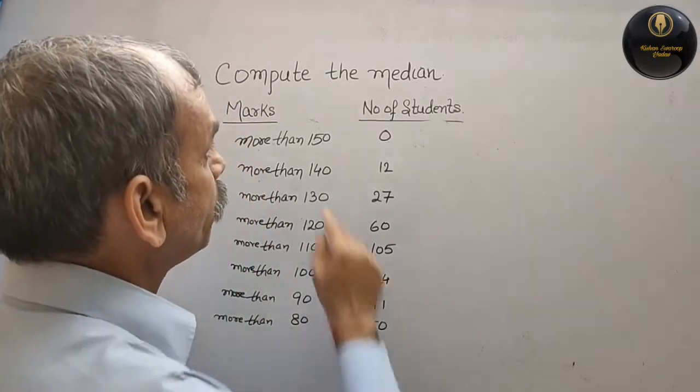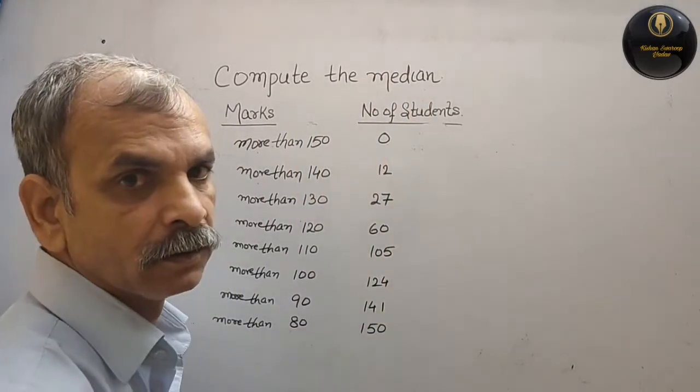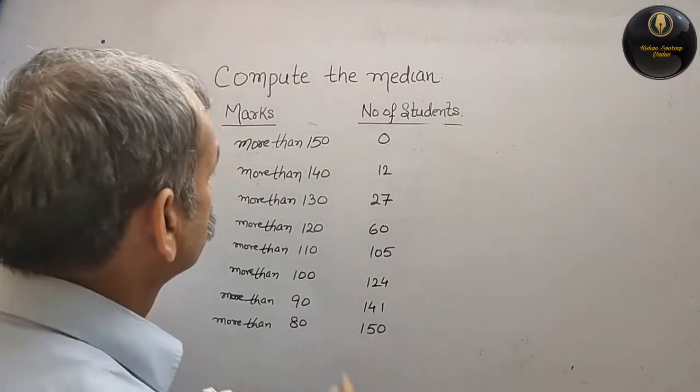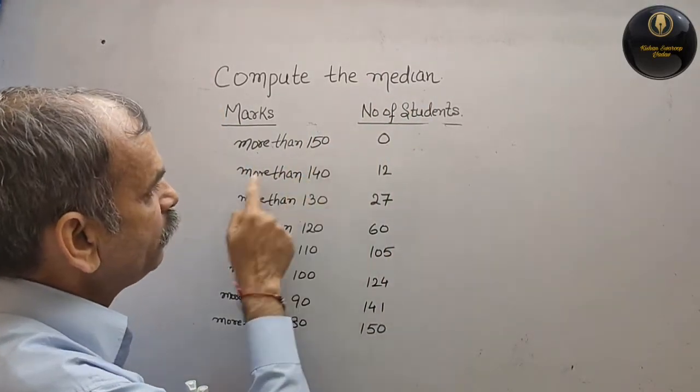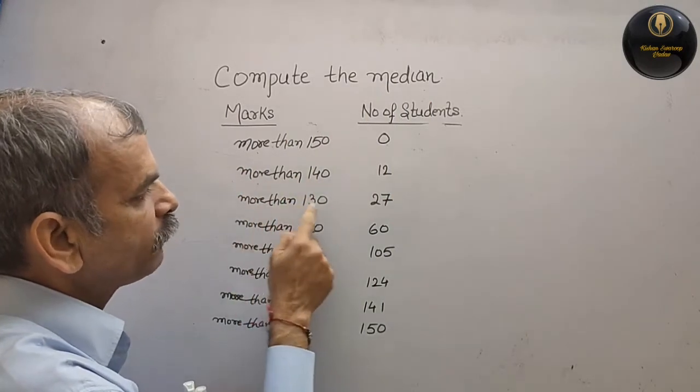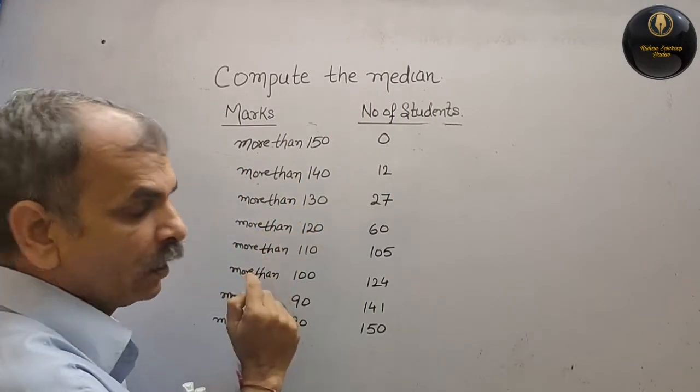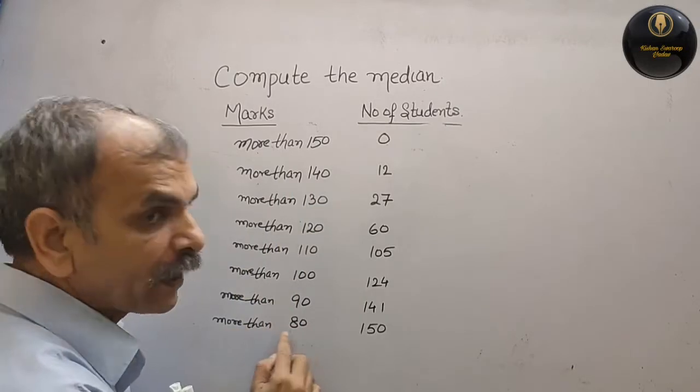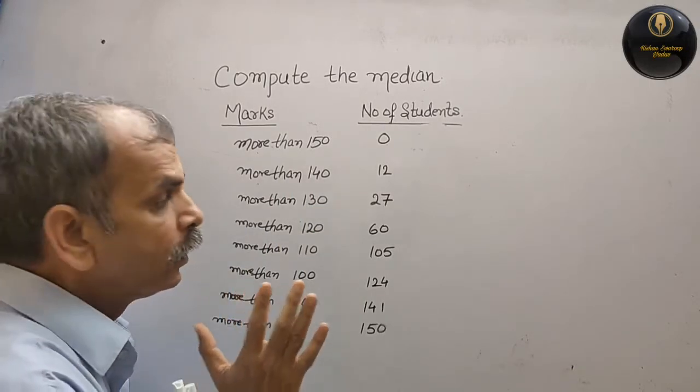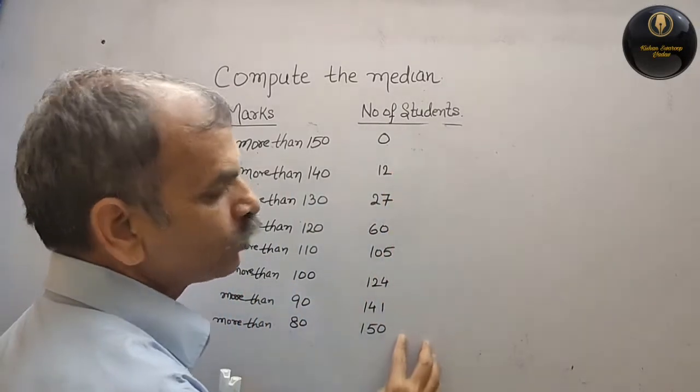Your question is compute the median. What they have given: more than 150, more than 140, more than 130, more than 120, likewise up to more than 80. Here what they have given number of students: 0, 12, 27, 60, 105, 124, 141, and 150.